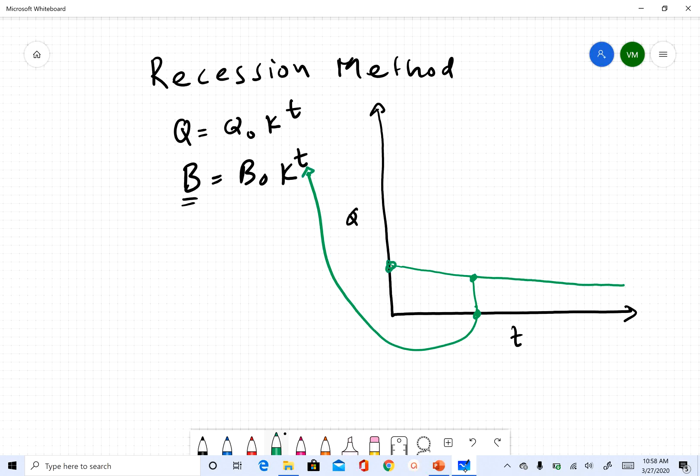That's B for any given time, and your initial baseflow that you specify will be B₀. And k is called the recession constant.